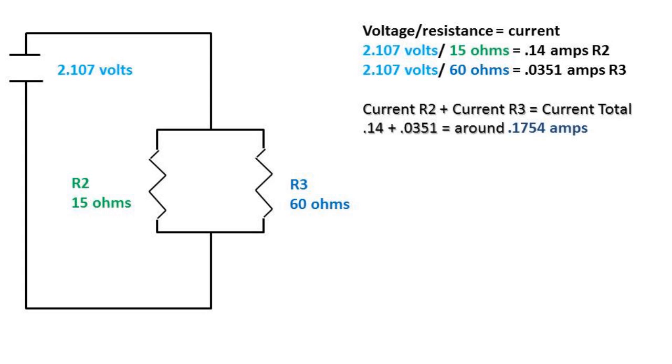To check our work, we can add the current of resistor two and the current of resistor three to see if it adds up to resistance total. In this case, it gets pretty close to 0.1754. It's not exactly 0.1754 due to rounding of numbers.